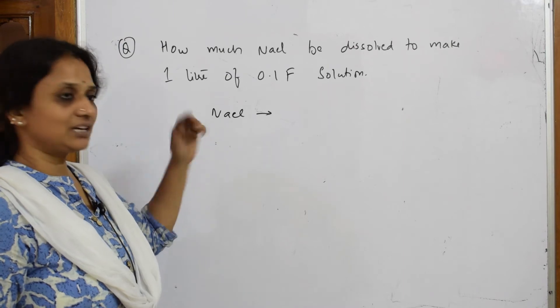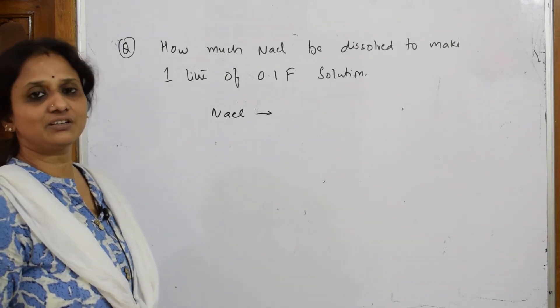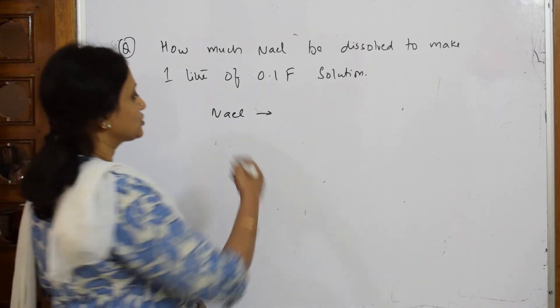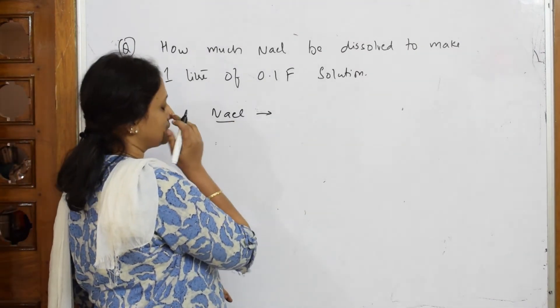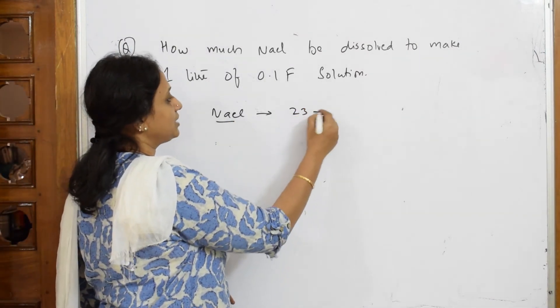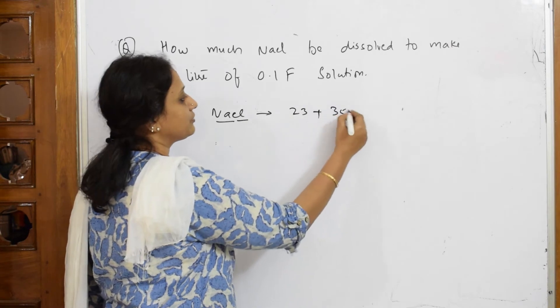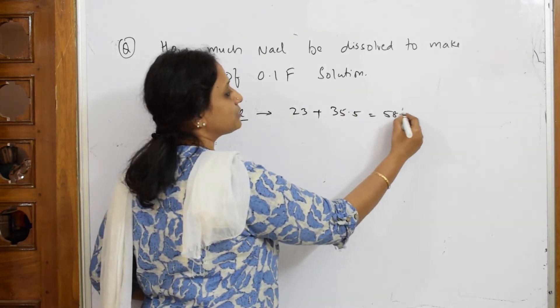So the gram formula weight for sodium is 23, plus for chlorine is 35.5, together makes 58.5 grams. This is for your ionic substances.